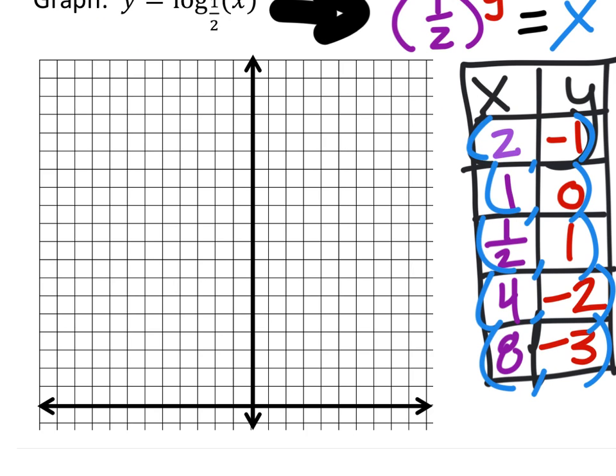So here's my graph. I'm going to put these all in. I'll go ahead and start with (2, -1), which is right here. Then we have (1, 0). We have (1/2, 1), which is about right there. Then we've got (4, -2), which would be somewhere in this area. And then we have (8, -3).